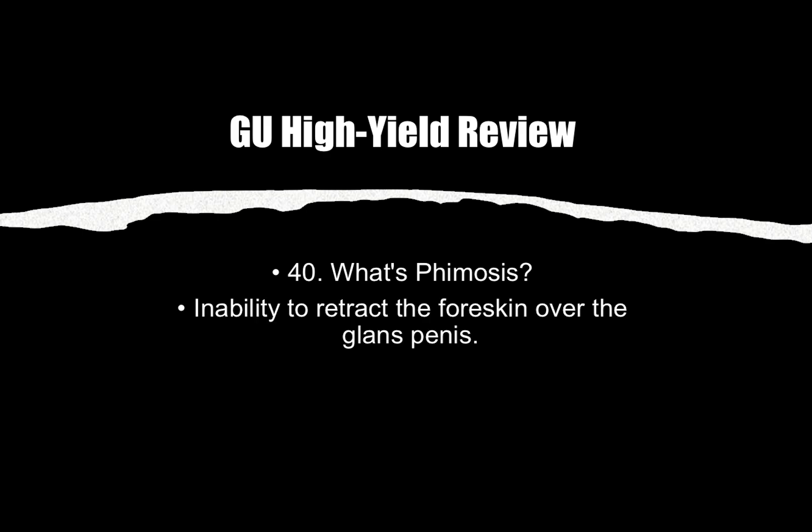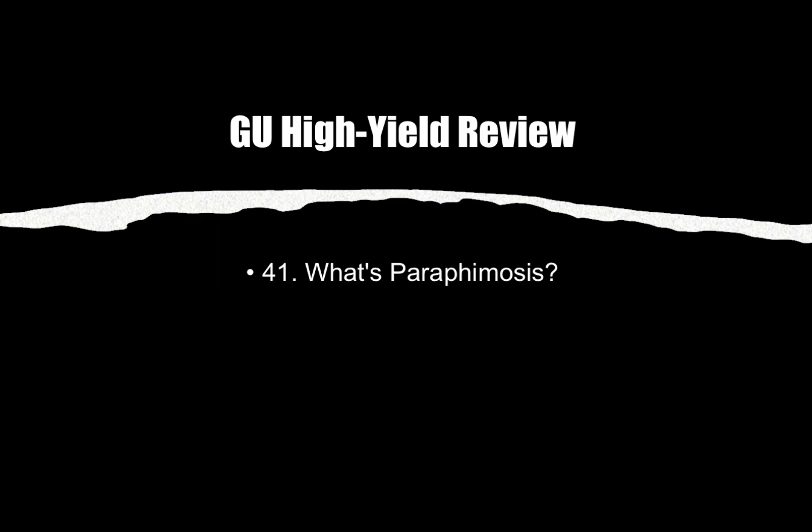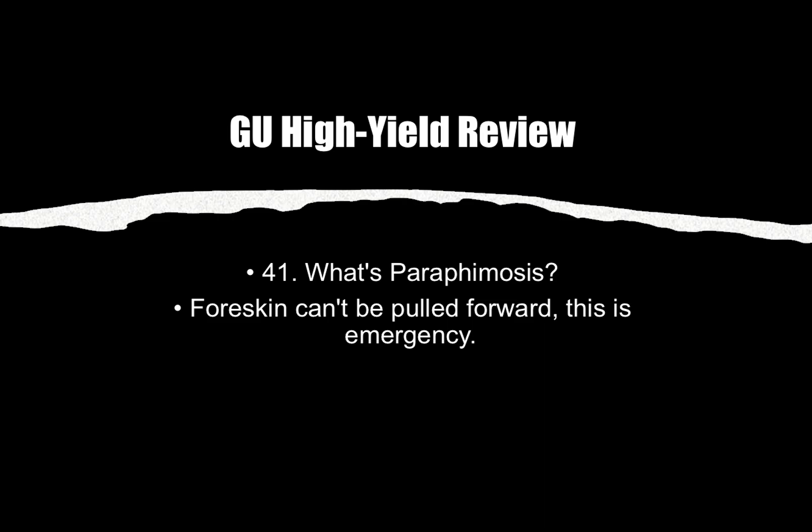Number forty: What is phimosis? Phimosis is the inability to retract the foreskin over the glans penis. In a question stem, they'll say a patient is unable to retract the foreskin — that is phimosis. Number forty-one: What is paraphimosis? Paraphimosis is when the foreskin cannot be pulled forward. This is an emergency.